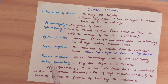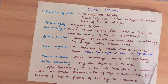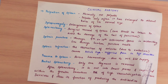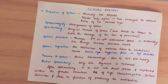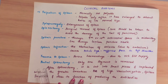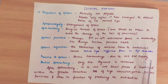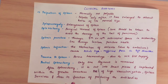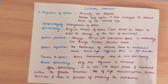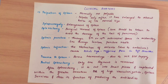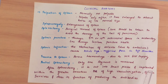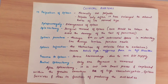Trauma to the spleen causes severe hemorrhage due to its rich blood supply. Next is partial splenectomy — if one segment of the spleen is cut and removed, it is called partial splenectomy. After splenectomy, the spleen is cut into small pieces and implanted into the greater omentum.